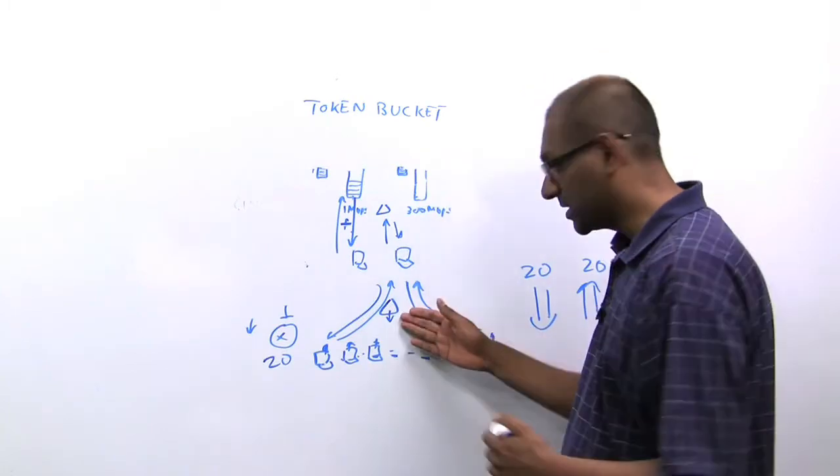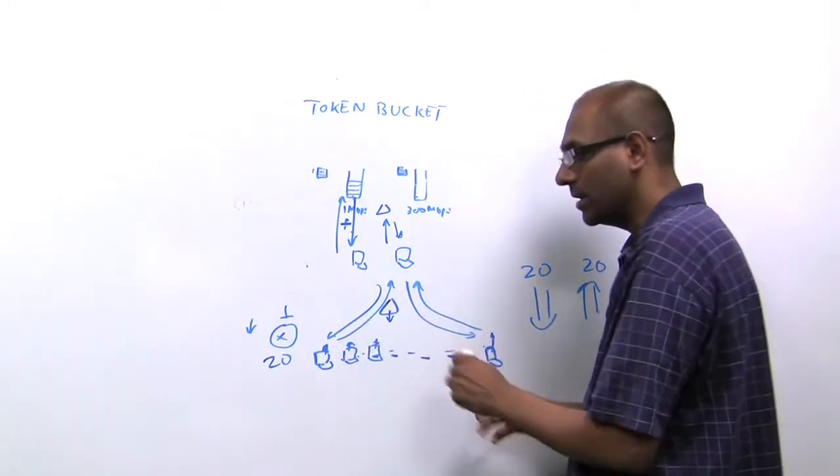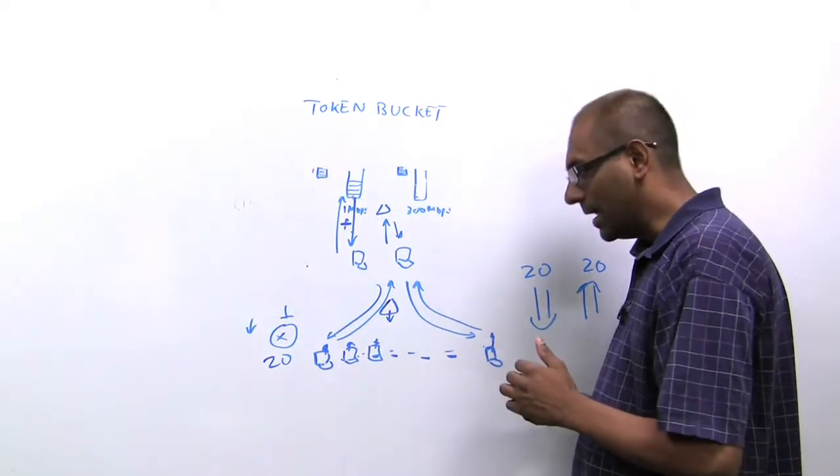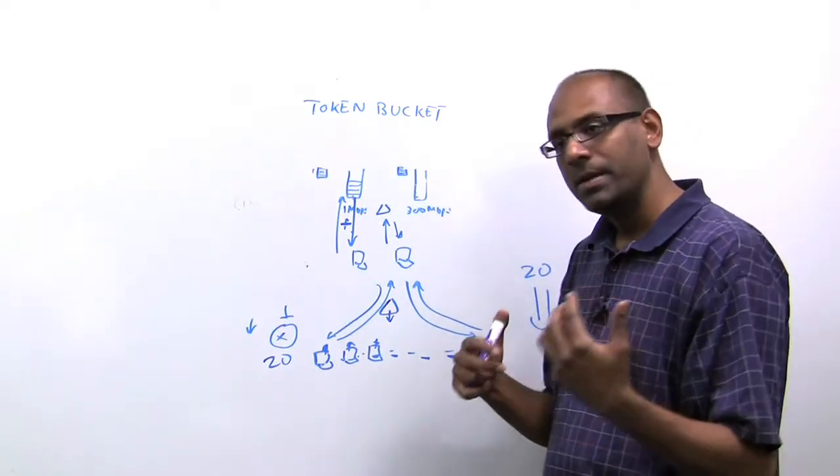We think of this access point as having 20 virtualized endpoints, each of which is serving its own corresponding device. And then we come up with contenders, downlink and uplink.